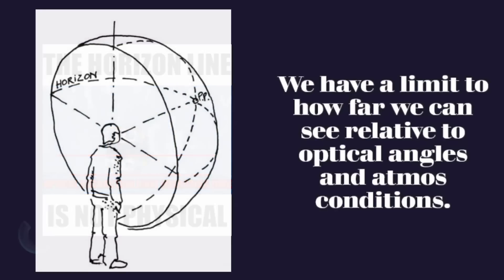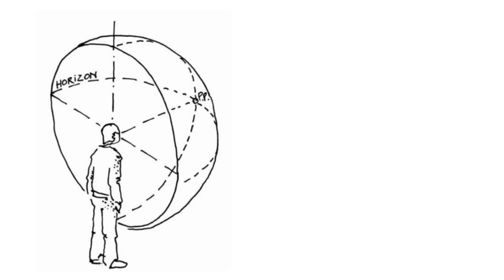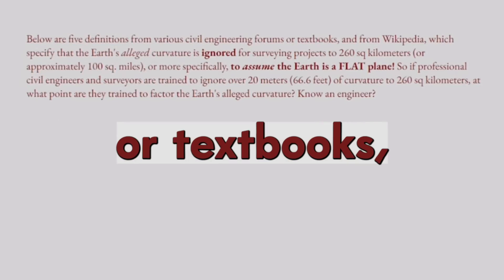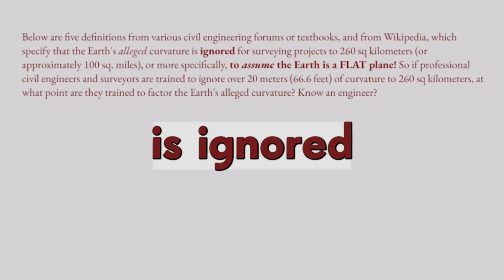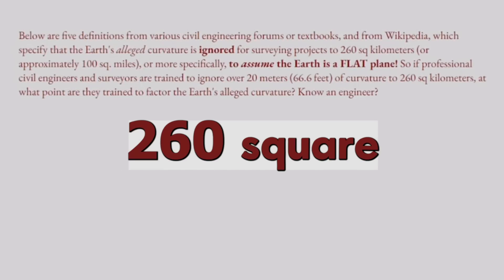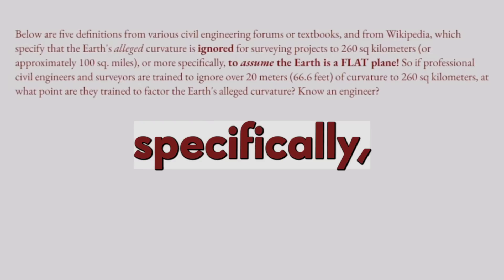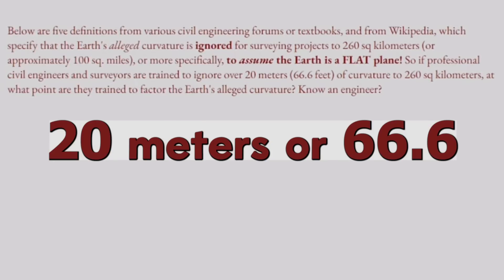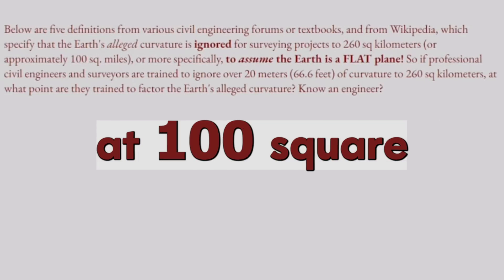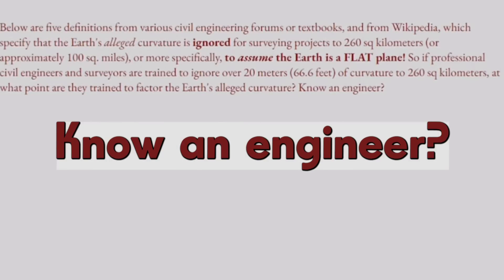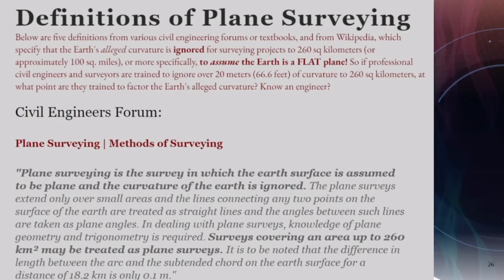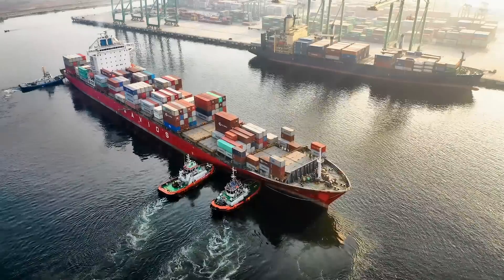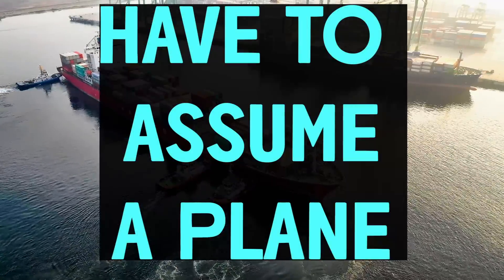Here are five definitions from civil engineering forums, textbooks, and Wikipedia specifying that the earth's alleged curvature is ignored for surveying projects up to 260 square kilometers, or approximately 100 square miles. Professional civil engineers and surveyors are trained to assume the earth is a flat plane. If they're ignoring over 20 meters — 66.6 feet — of curvature at 100 square miles, at what point are they trained to factor it in? Whether building bridges, railways, or canals, engineers must assume the earth is a plane and completely neglect the notion of curvature to do real-world engineering.